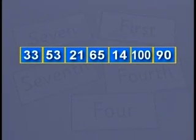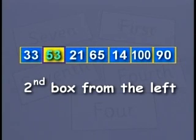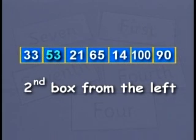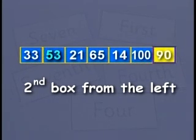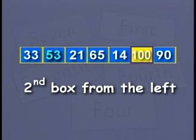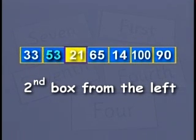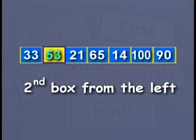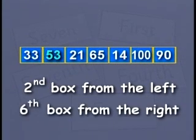Let's look again at the numbers we put into the boxes. If 53 is in the second box from your left, then from your right, in which box would 53 be? From your right, 53 would be in box number 1, 2, 3, 4, 5, 6. So 53 is in the sixth box from your right.